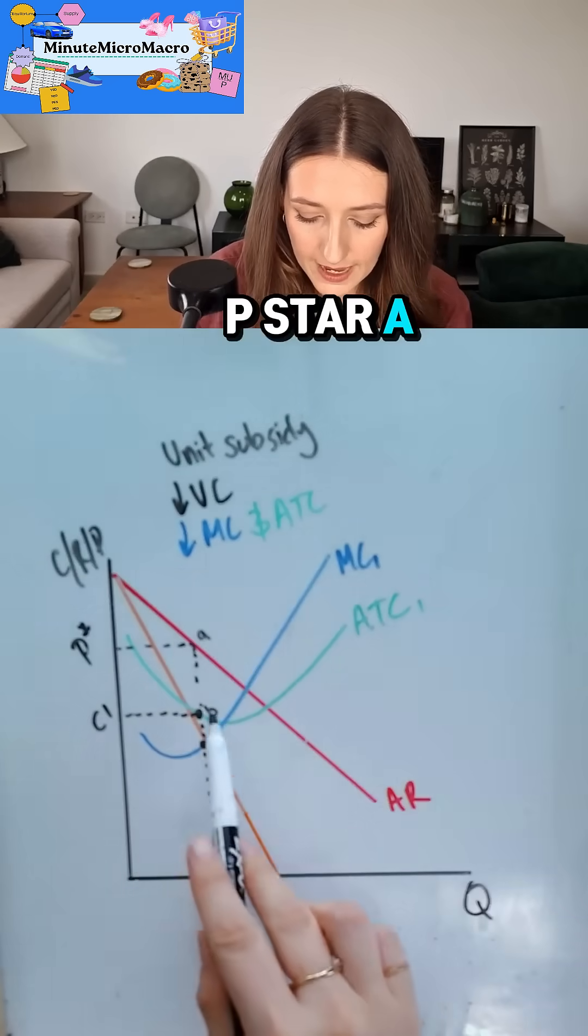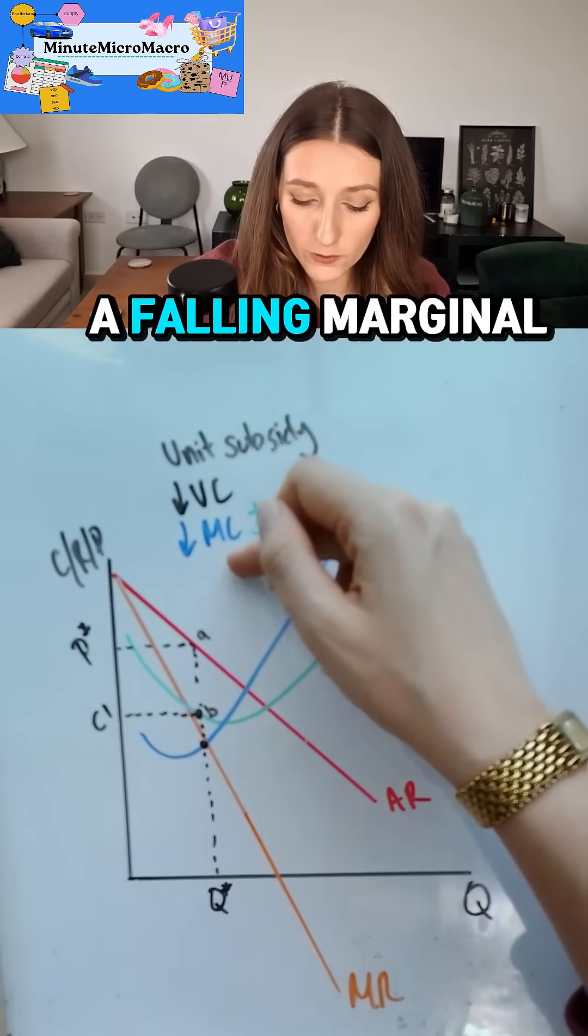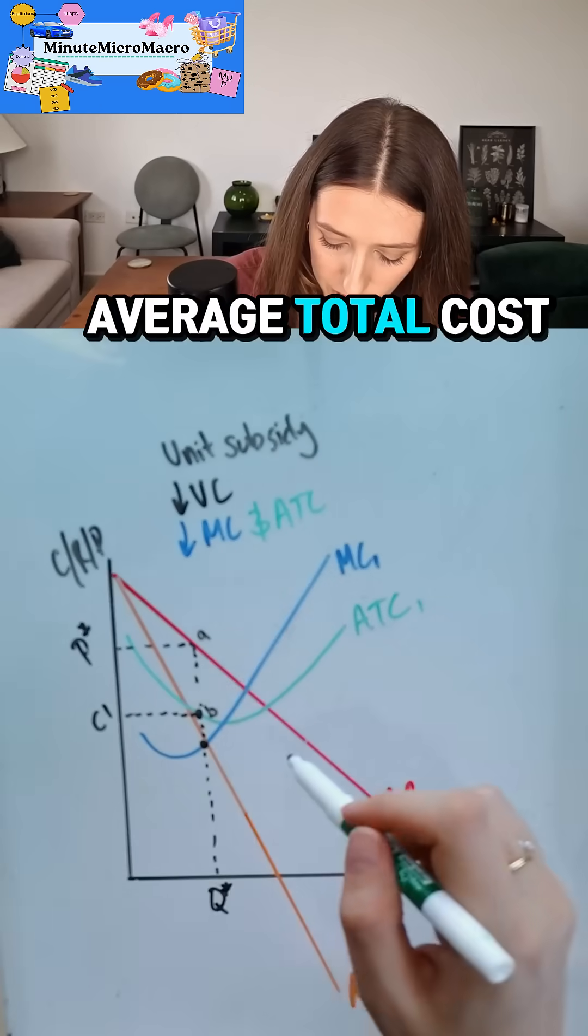And we can see that their total profit would have been P star A B C1. If they were given a unit subsidy, there'd be a fall in variable cost which would mean a fall in marginal cost and a fall in average total cost.